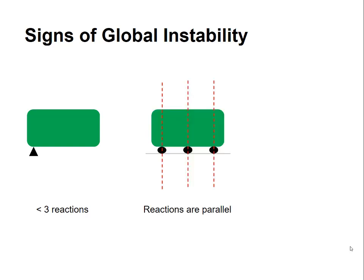The next example we saw earlier in this video. Shown in red are the lines of action of each of the rollers. The force at each of those rollers is vertical and those lines of action are parallel to each other. In that case, there's no resistance perpendicular to those lines of action and the structure is unstable in that direction.